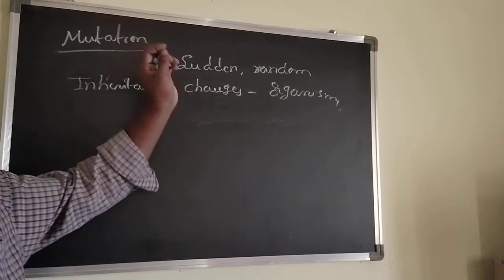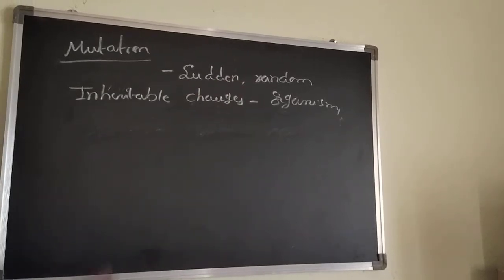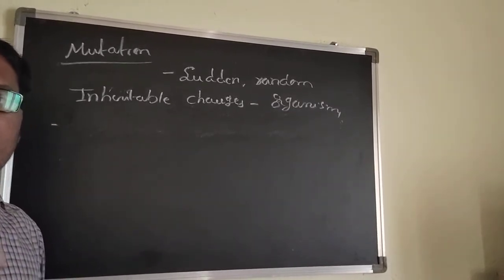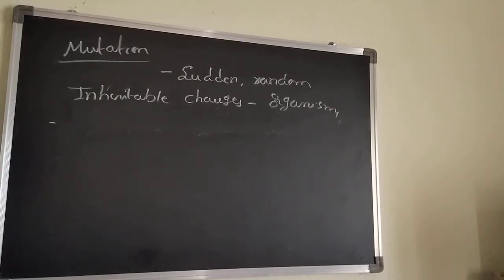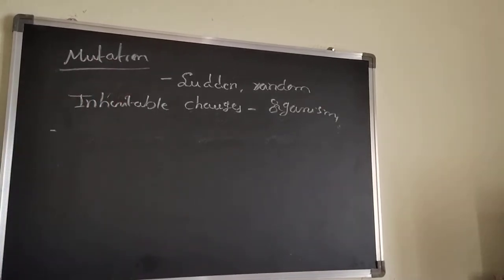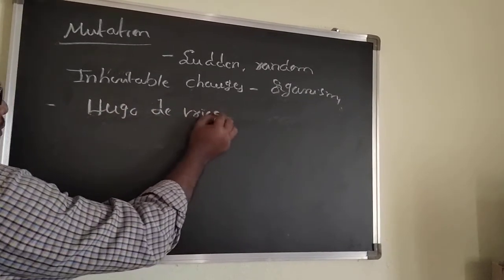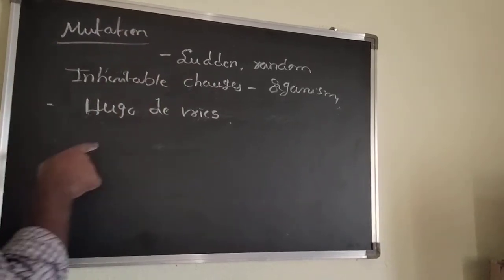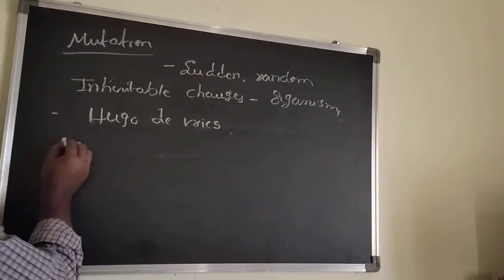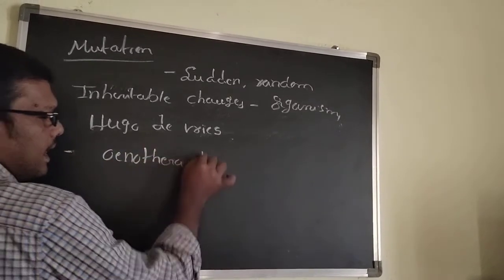The raw material for the formation of new species is obtained from mutation. The term mutation was coined by Hugo de Vries. He observed mutation in Oenothera lamarckiana, the evening primrose plant.